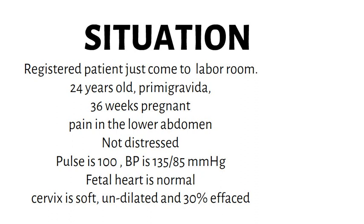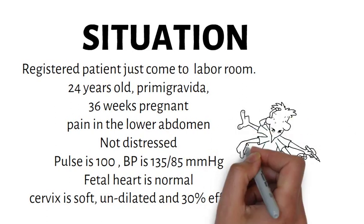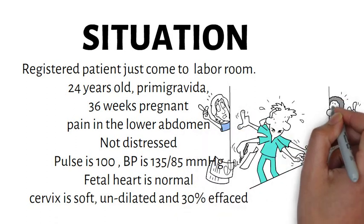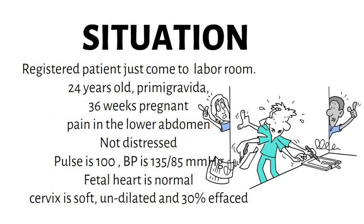She does not look distressed. On examination, her pulse is 100 beats per minute and regular. The blood pressure is 135/85. The fetal heart is normal on the fetus scope. On vaginal examination, the cervix is soft, undilated, and 30% effaced with no vaginal discharge. She is accompanied by her husband, and her blood group on antenatal testing is AB negative.